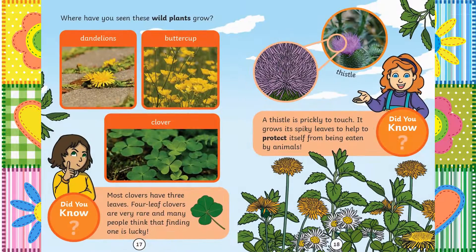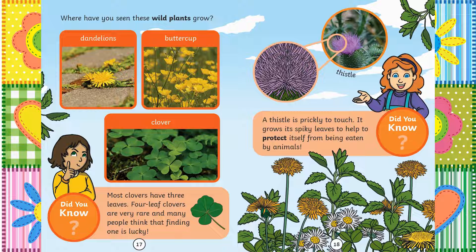Where have you seen these wild plants grow? Dandelions, buttercup, clover. Did you know most clovers have three leaves? Four-leaf clovers are very rare and many people think that finding one is lucky. Thistle. Did you know a thistle is prickly to touch? It grows its spiky leaves to help to protect itself from being eaten by animals.